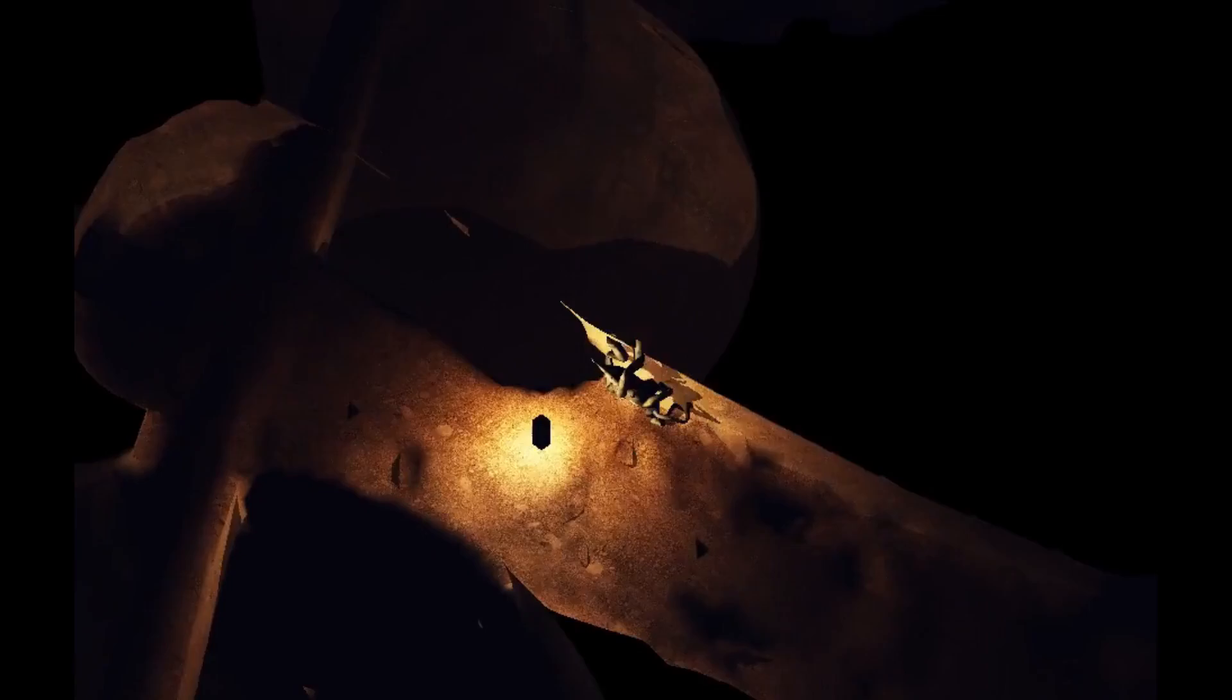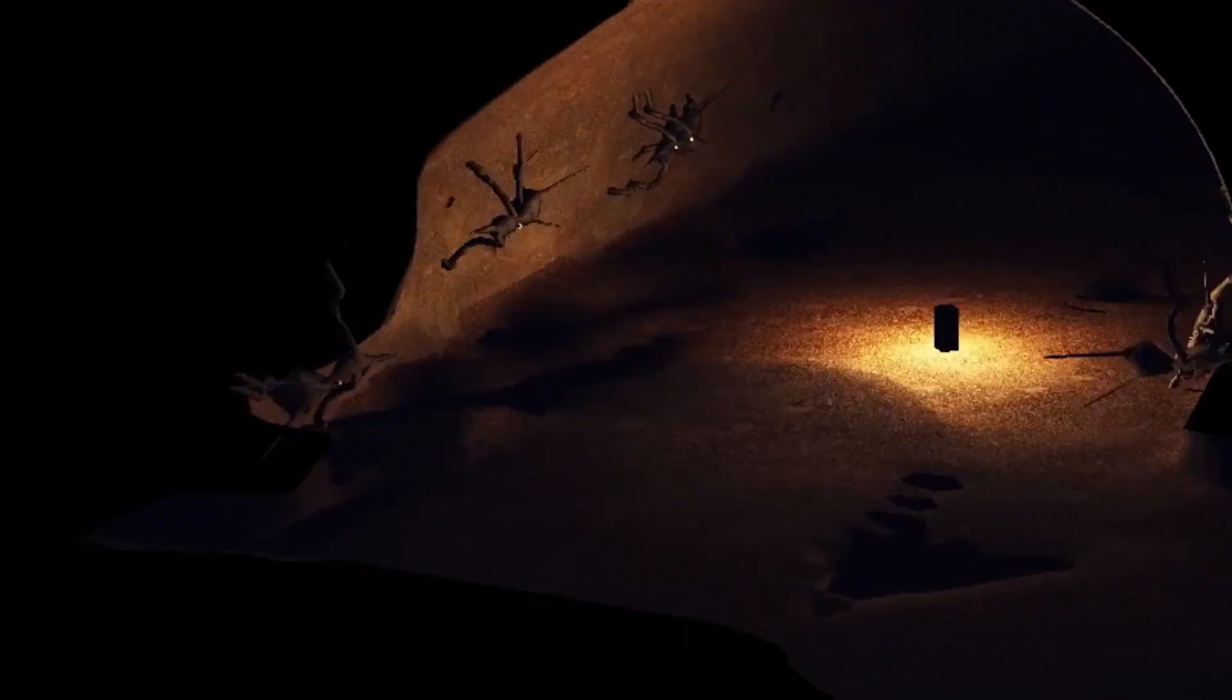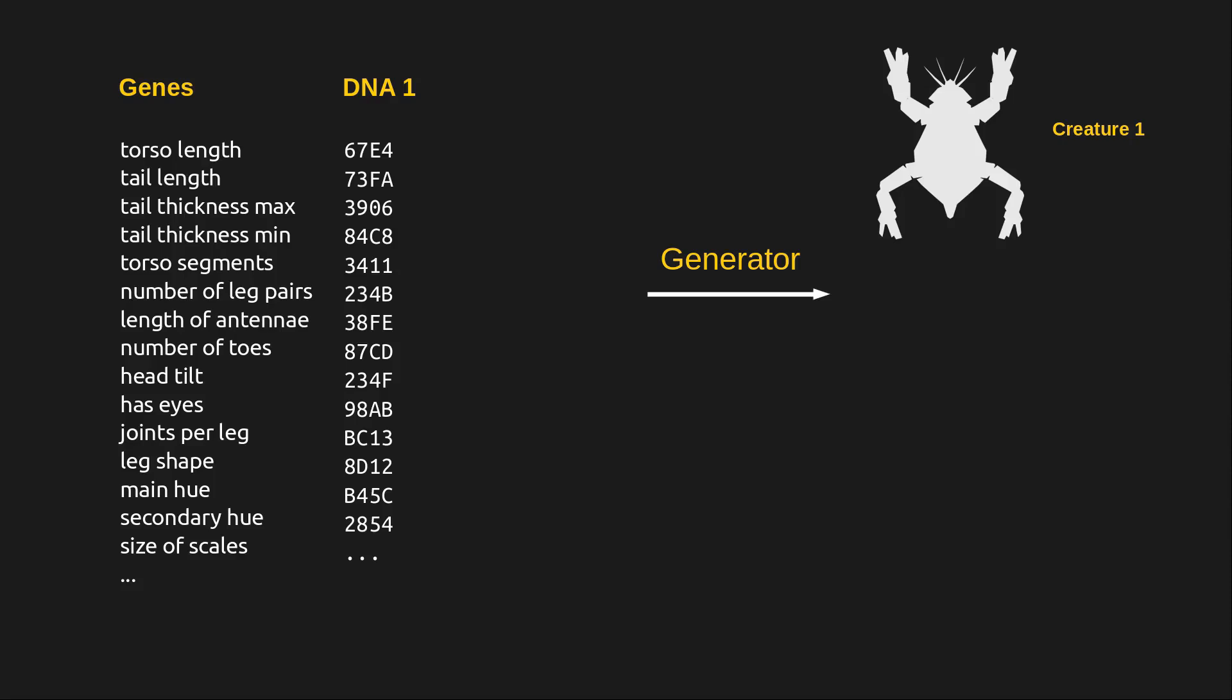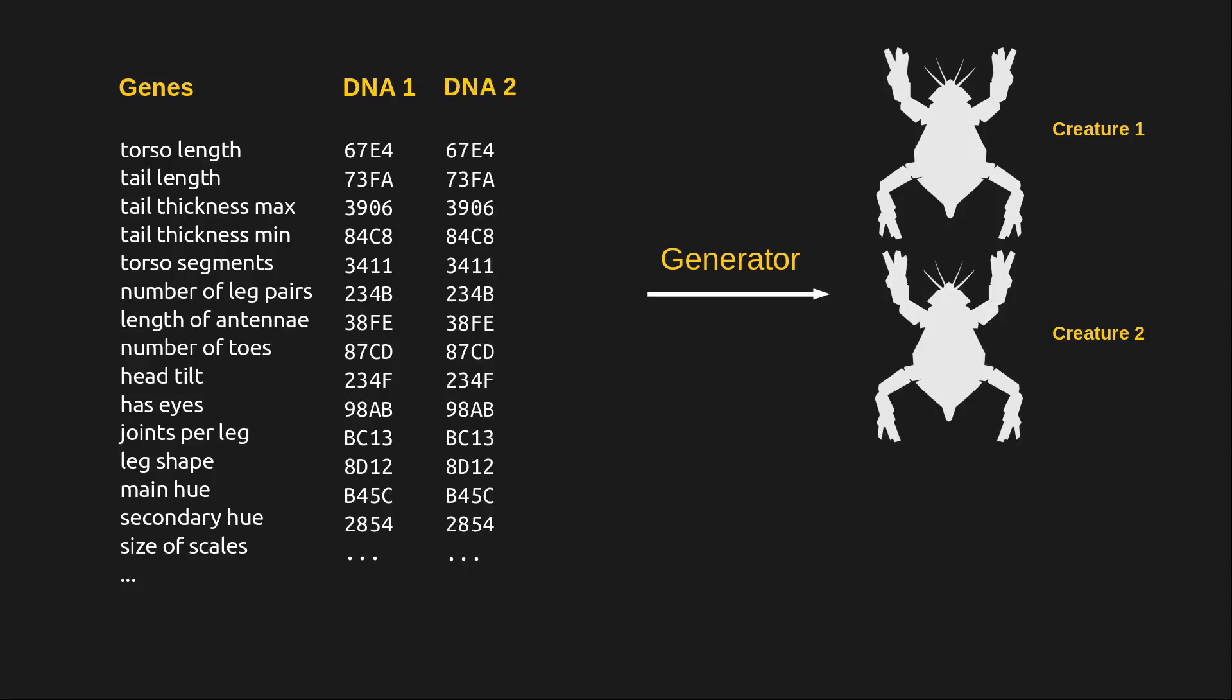Despite all this, I think I'm now pretty much at a point where I can use the system in-game, and anything that still looks weird will just make the creatures look creepier. Now, before we start mating creatures, I want to highlight a few important properties of the generator. When we input a random DNA, we get a certain creature. When we input that same DNA again, we expect to get that same creature as a result. In other words, the generator is deterministic.